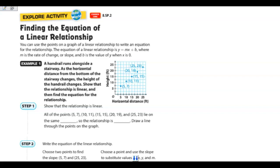All right, so we're going to be finding the equation of a linear relationship. Remember that we use the slope-intercept form where y equals mx plus b. m is your slope, or your rate of change, and b is the initial value, or the y-intercept.